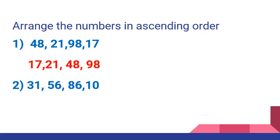After 10, the next smallest number is 31. After 31, the next smallest number is 56. After 56, the next smallest number is 86. The ascending order of these numbers will be 10, 31, 56 and 86.